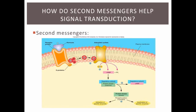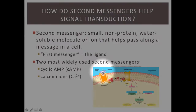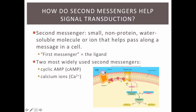Another major player in signal transduction cascades are second messengers. These are called second messengers because they help pass along the message within the cell. Second messengers are small, non-protein molecules or ions that help pass along a message inside of a cell. This name begs the question of what is the first messenger. The first messenger is the signaling molecule or the ligand itself — whatever actually binds to the receptor.